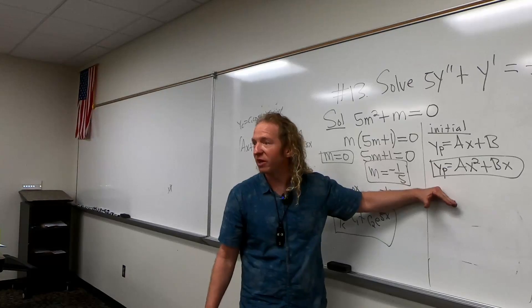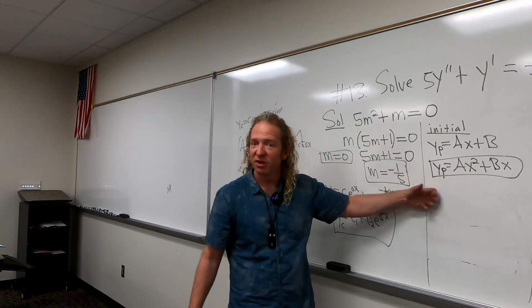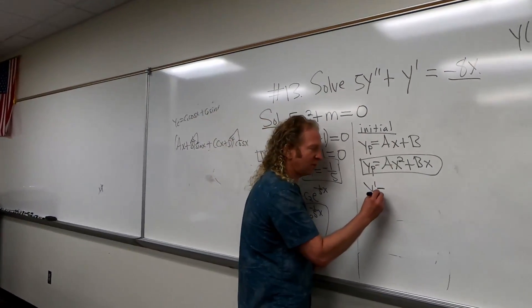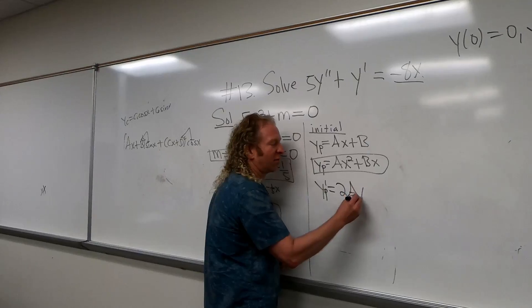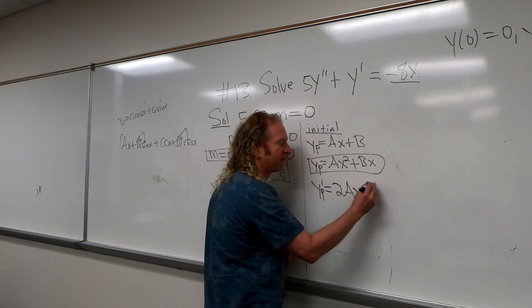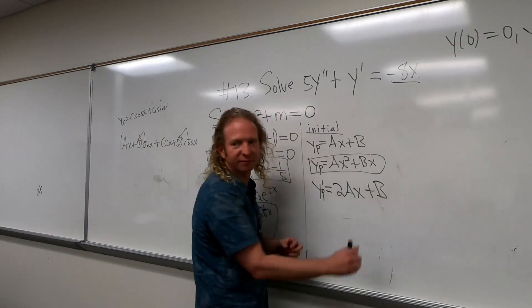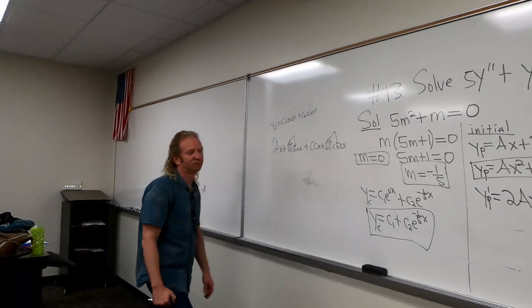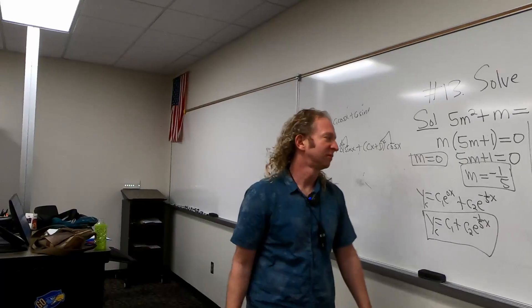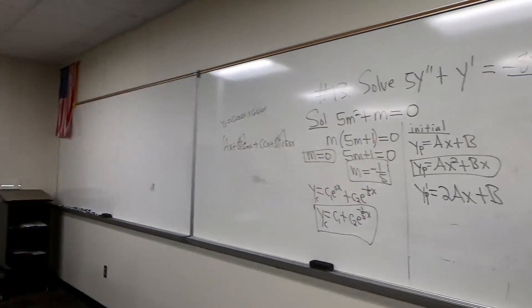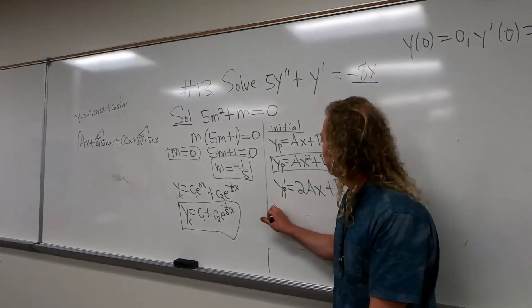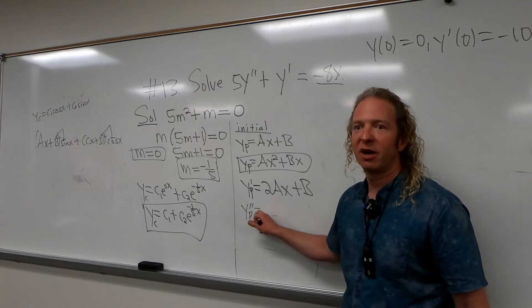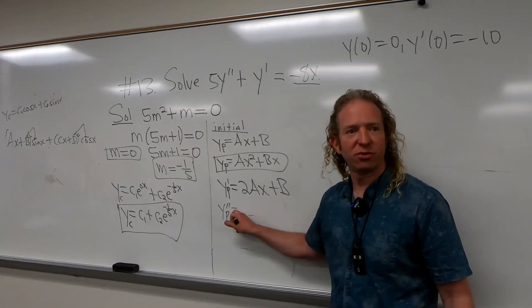So now we've got to take derivatives of this thing. So Yp prime equals 2AX plus B. Then we do it again, so Yp double prime is just 2A.